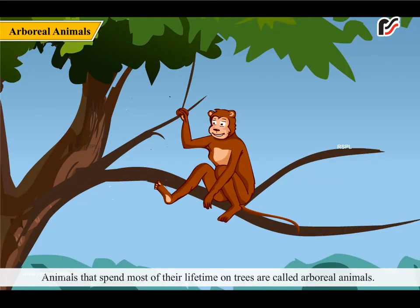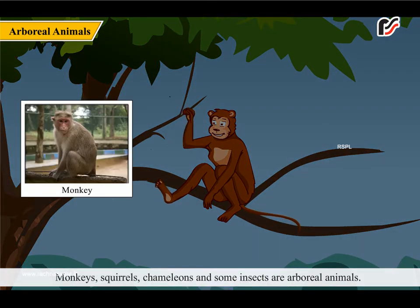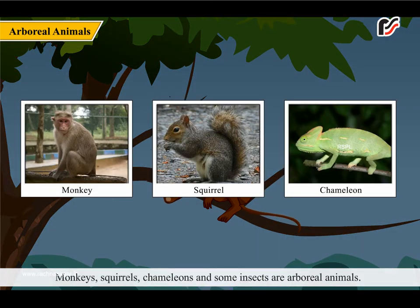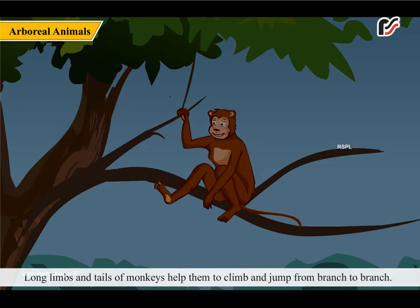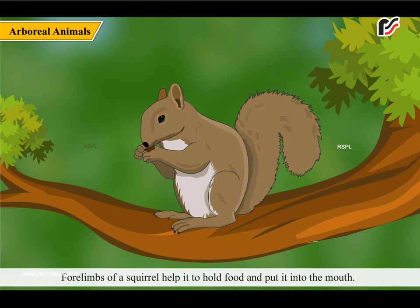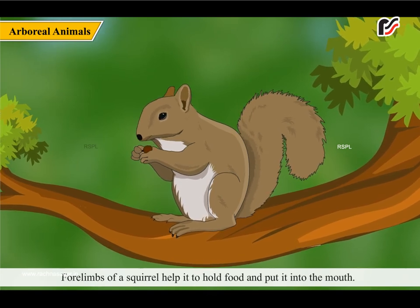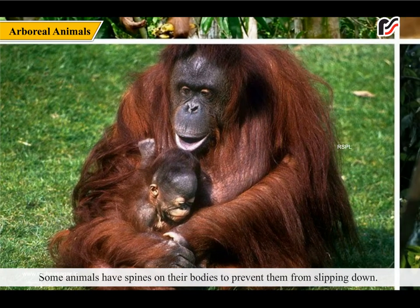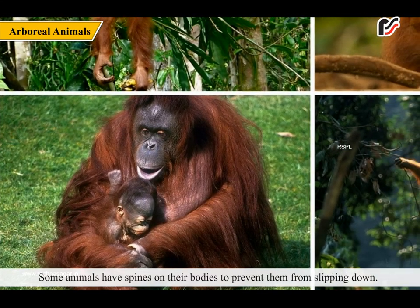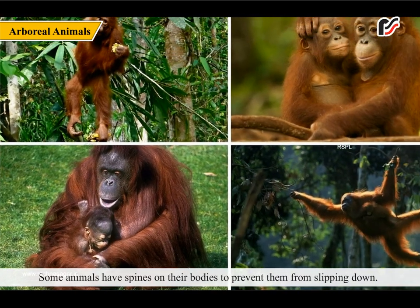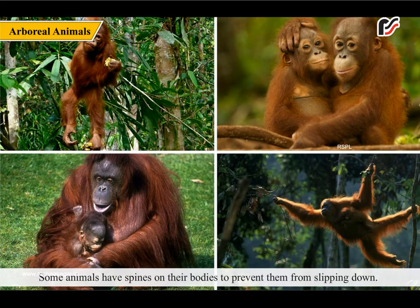Animals that spend most of their lifetime on trees are called arboreal animals. Monkeys, squirrels, chameleons and some insects are arboreal animals. Long limbs and tails of monkeys help them to climb and jump from branch to branch. Four limbs of a squirrel help it to hold food and put it into the mouth. Some animals have spines on their bodies to prevent them from slipping down.